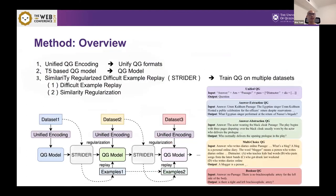This is the overview of our methods. We have a unified QG encoding to unify QG formats and then we have a QG model based on T5. We also present STRIDER which contains two parts, difficult example replay and similarity regularization to train QG model on multiple datasets to alleviate catastrophic forgetting.